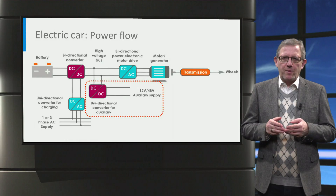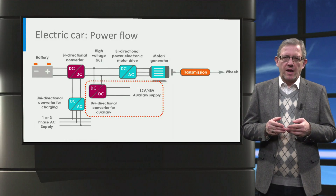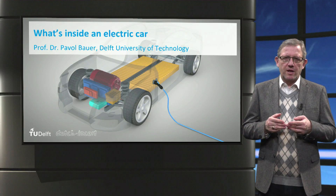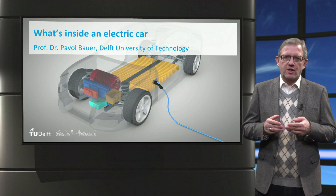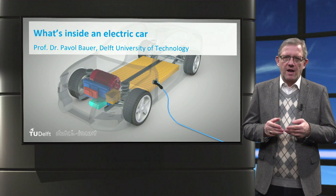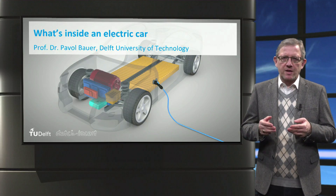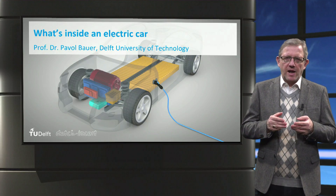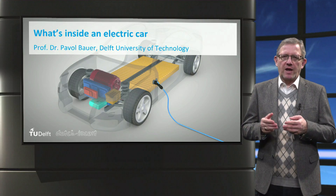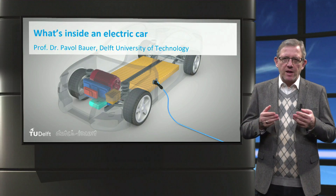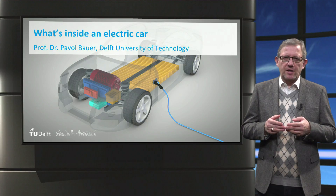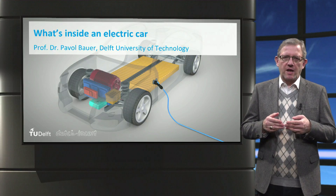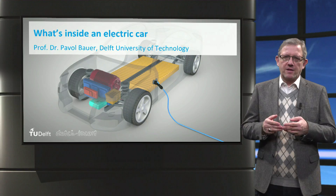To wrap up, the traction battery, the electric motor and the power electronics play a key role in the operation of an electric vehicle. Since power is exchanged between these components electrically using cables, it provides great flexibility in the design of the car. This flexibility is not possible with cars with a mechanical drivetrain due to the large size and weight of the mechanical components.